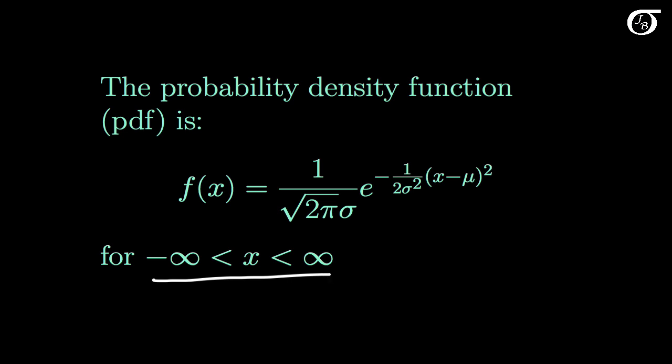There are two parameters for this distribution. Mu is the mean of the distribution, and the mean can take on any finite value as well. Sigma is the standard deviation, and sigma squared, of course, is the variance. Sigma has to be some positive value. And of course, sigma squared would have to be some positive value as well.